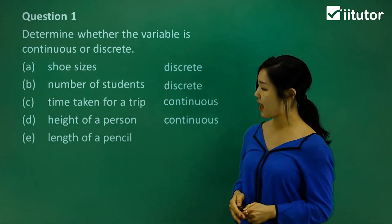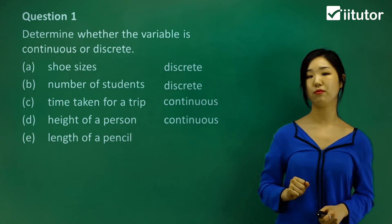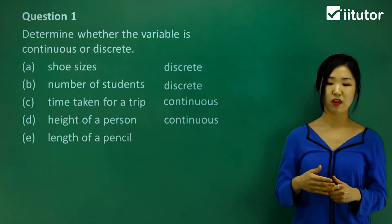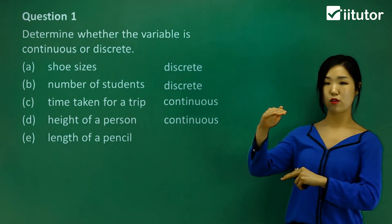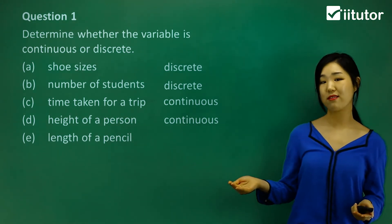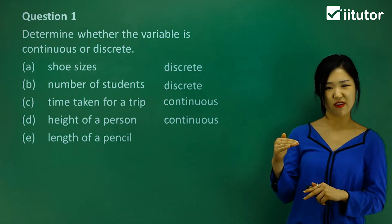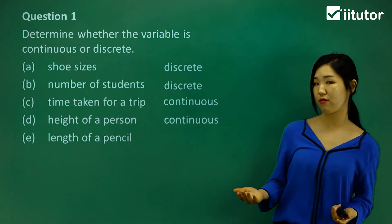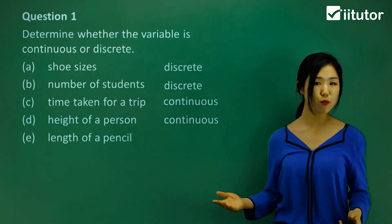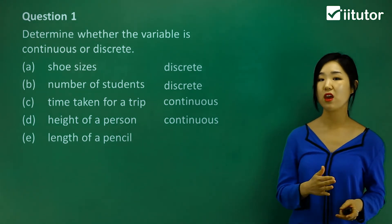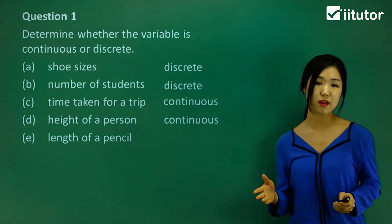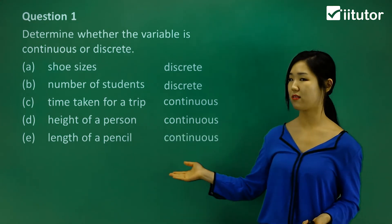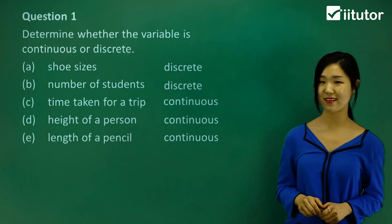The next one is the length of a pencil. A pencil could be five centimeters, but it doesn't have to be a fixed number like five. It could be 5.2, 5.25, or 5.205 — so many possibilities even just between two and three. Therefore, this one is also continuous. Length is always continuous, not just for a pencil — the length of anything is always continuous.